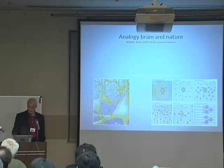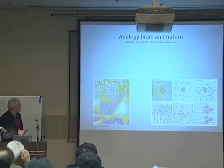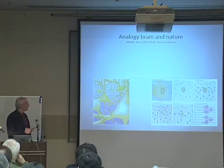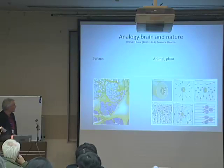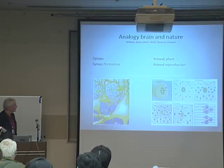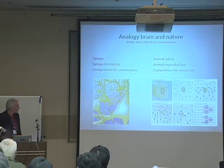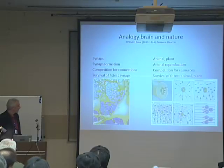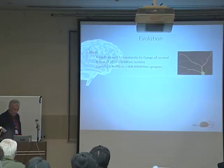The question is whether an evolutionary point of view can be beneficial. Just as Professor Tula mentioned, there is an analogy between the brain and nature. Already one of Haeckel's students, Wilhelm Roux, suggested this analogy, and Deakin has written a nice paper on it as well, where he considers a synapse as an animal or a plant, synapse formation analogous to animal reproduction, and competition for connections as the same as competition for resources. Basically, survival of the fittest synapse can be analogous to the survival of the fittest animal.